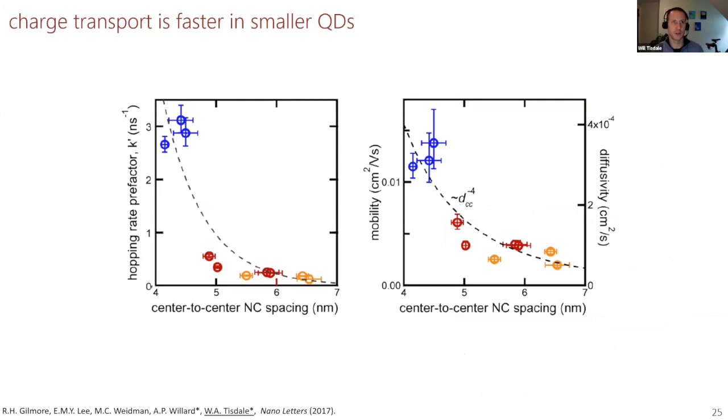So what sort of information do we collect? We can do things like measure the charge transport rate as a function of quantum dot size. This has been a topic that there's been remarkable inconsistency in the literature, depending on how you make the measurement. We directly get the hopping rate pre-factor, it's fastest for smaller nanocrystals, and even when you account for the shorter distance traveled per hop in smaller quantum dot solids by converting the pre-factor to a diffusivity or mobility, small quantum dots still win out in our measurements.